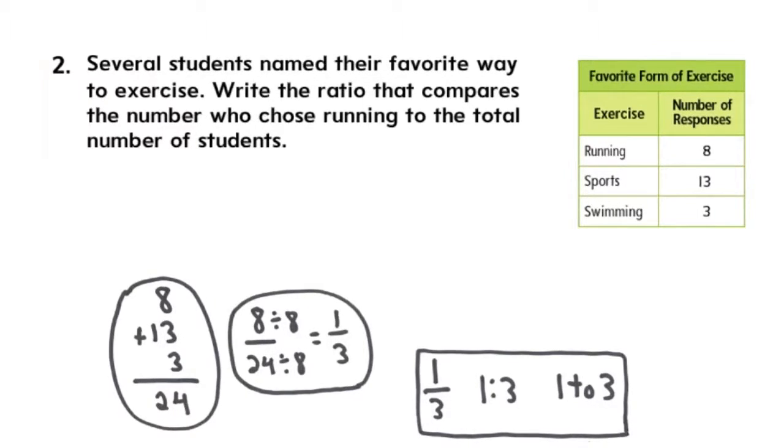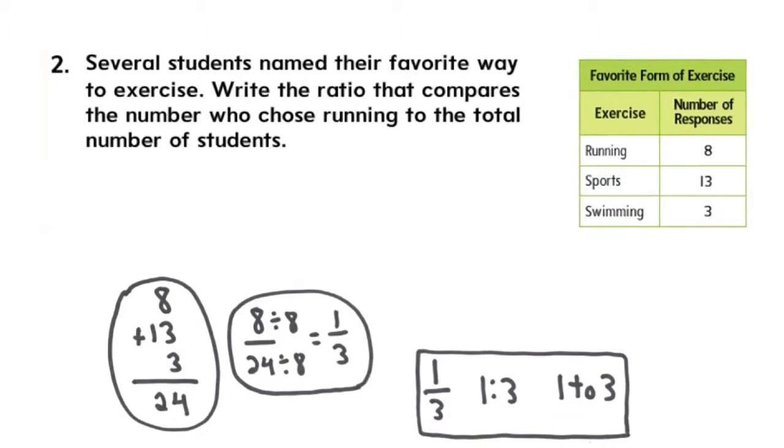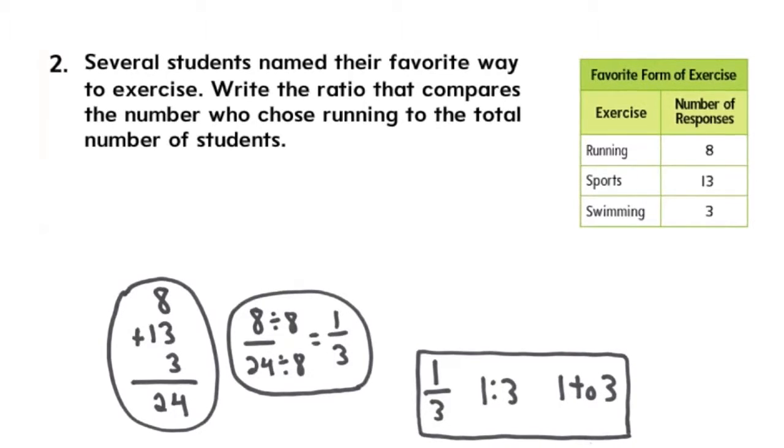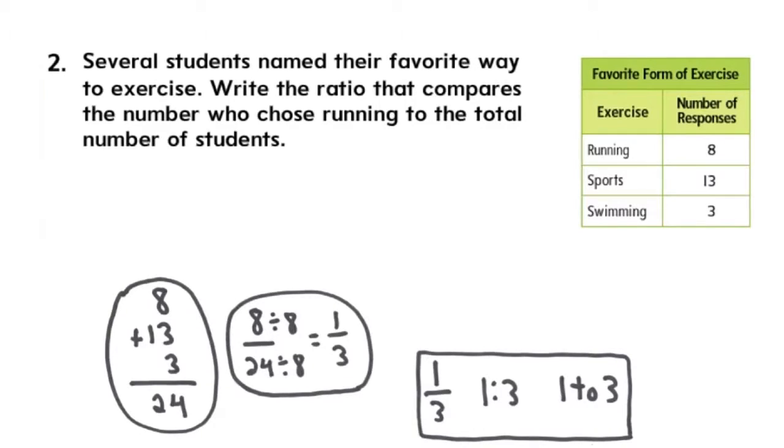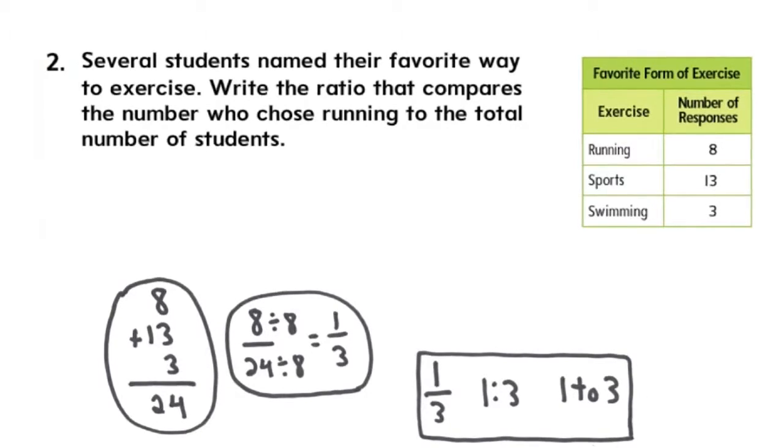And then you would simplify. In this case, you can simplify both numbers by 8. When you do, your final answer is 1 to 3. And again, write it down in all three forms.